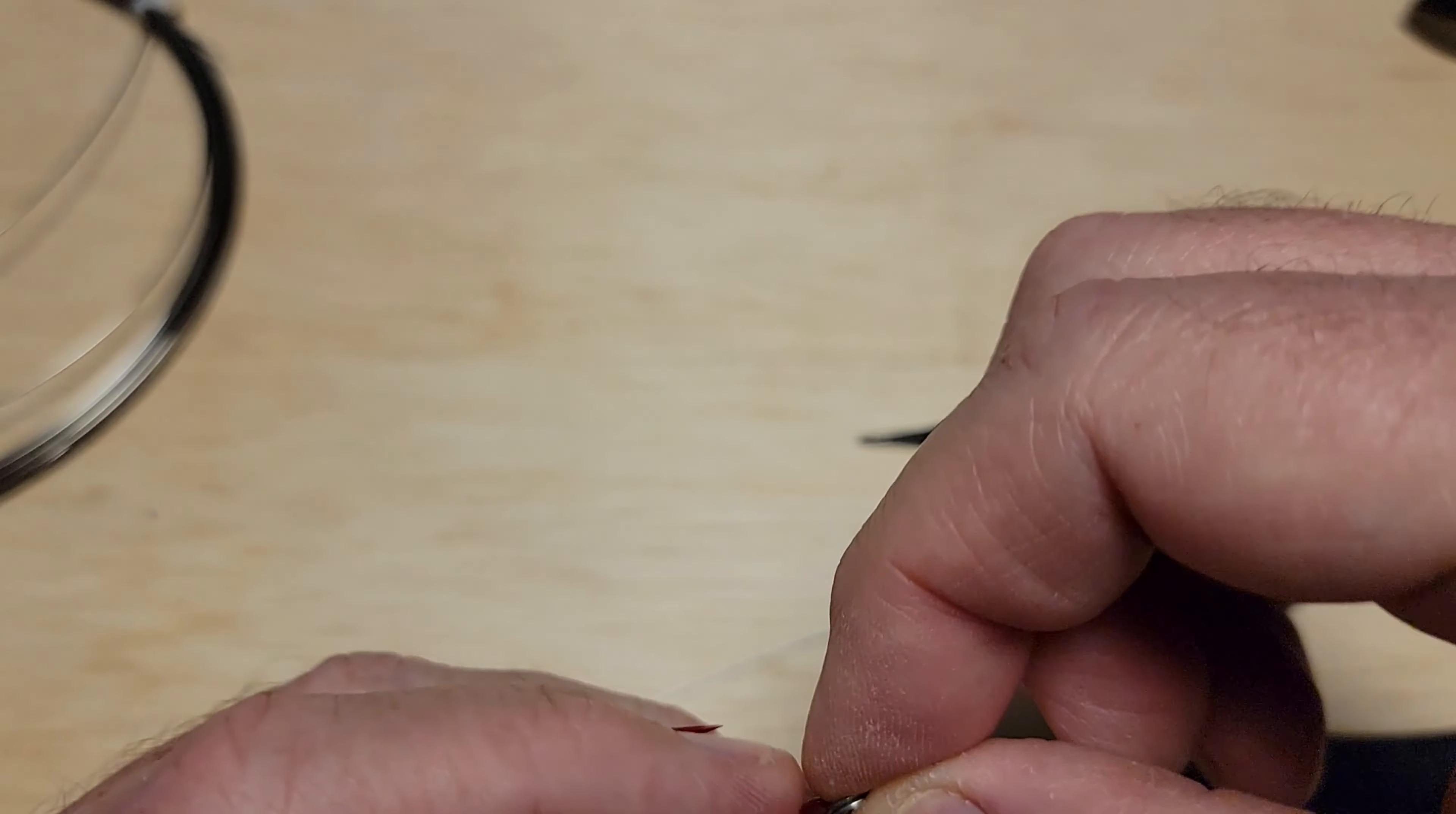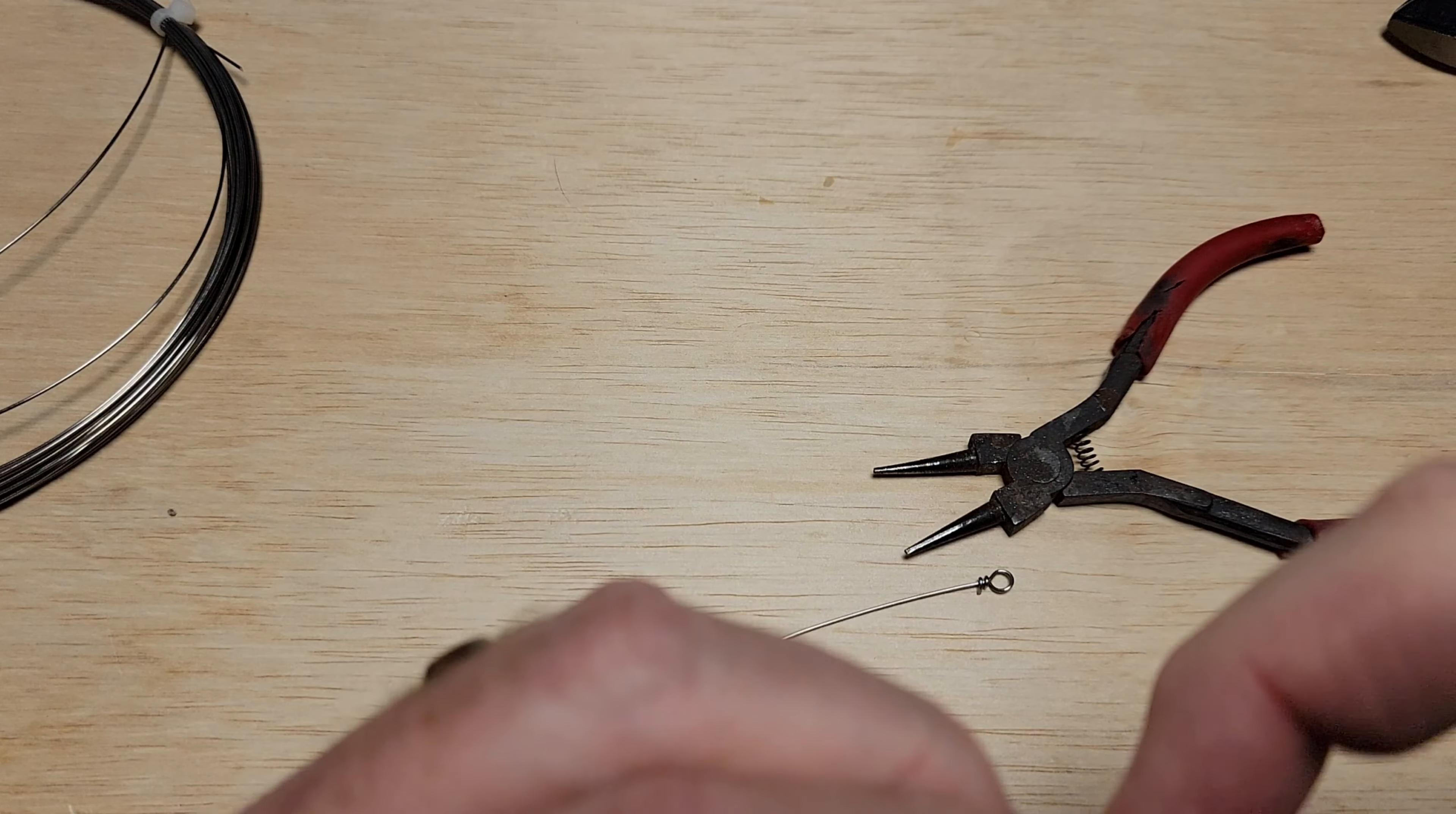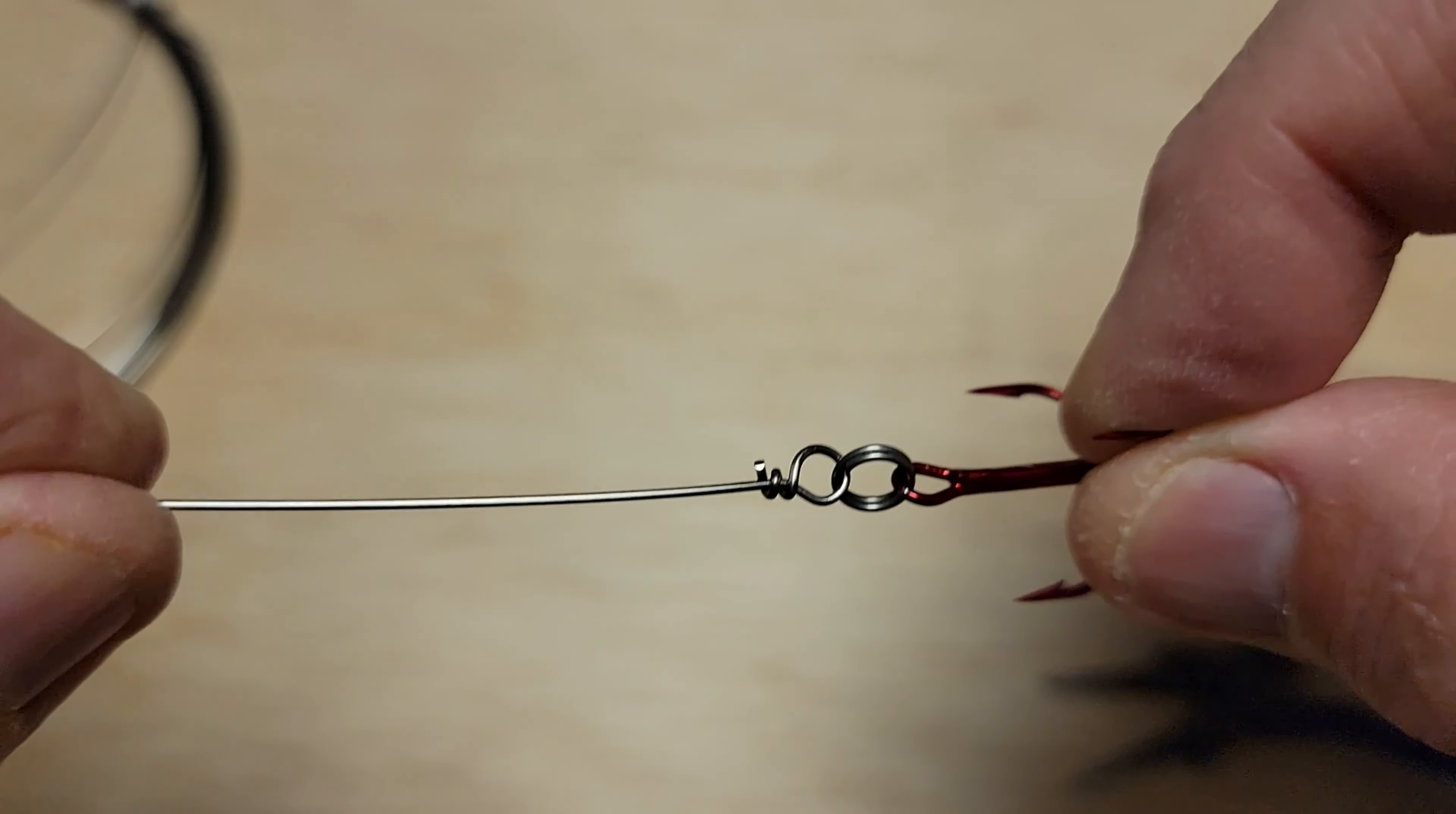Actually what I could have done there to make it even easier was feed the treble hook onto this and then also feed it onto the loop. But I didn't, so we're just going to pretend that's not what we're going to do. Got to find the edge there, the wire. Here we go. Just open it up again and hook that on there. There you go.